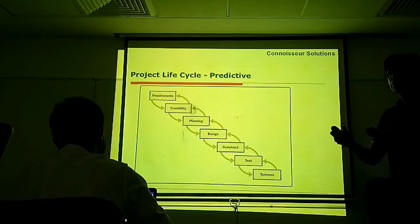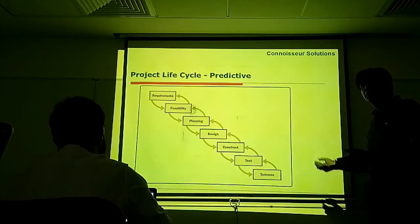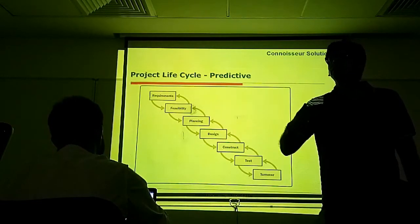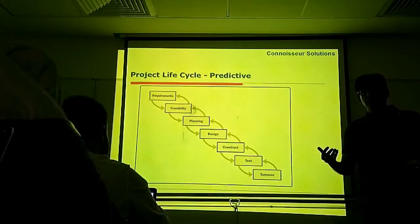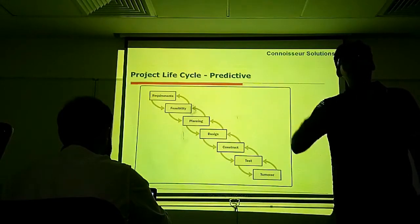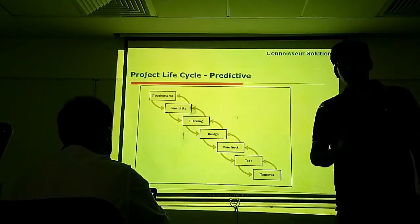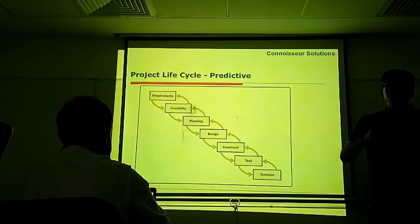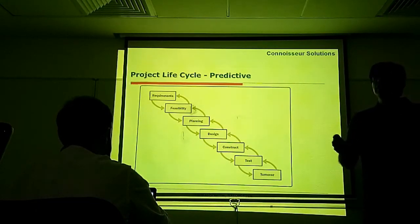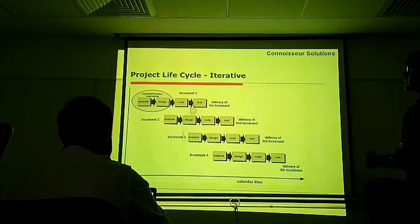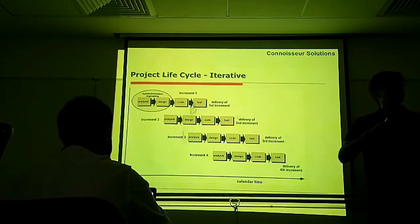And when he sees the product at this point, so late in the project life cycle, he may not be happy with the product. So what happens? He might outrightly reject the project or he might recommend some major changes to the product or project. To avoid this, bigger projects are generally delivered incrementally in a phased manner. So this is iterative life cycle.